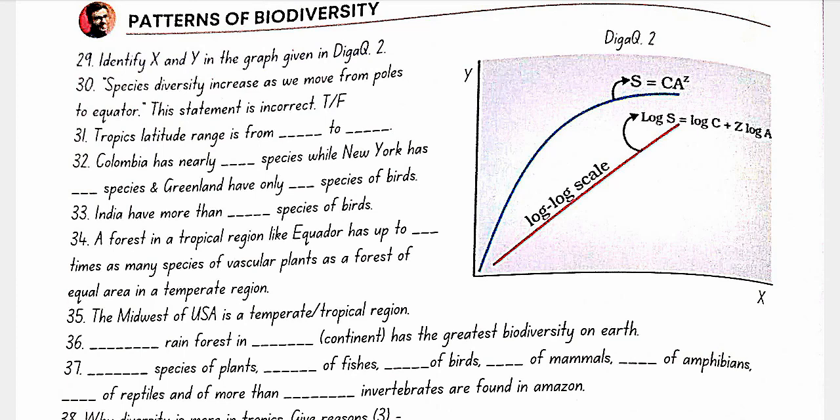Colombia has 1,400 species of birds, New York has 105, and Greenland has only 56 species of birds. India has more than 1,200 species of birds. A forest in a tropical region like Ecuador has up to 10 times as many species of vascular plants as a forest of equal area in a temperate region.